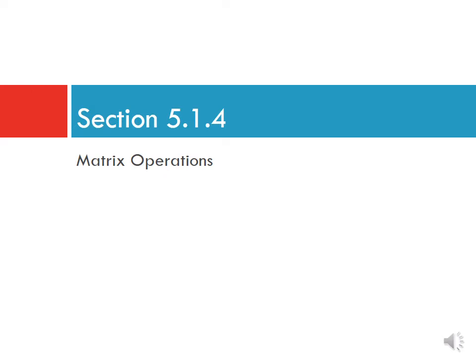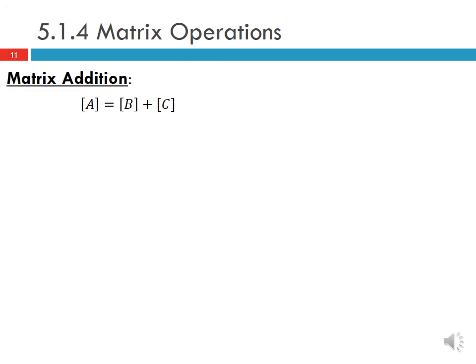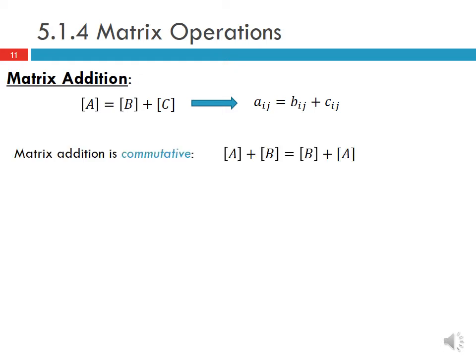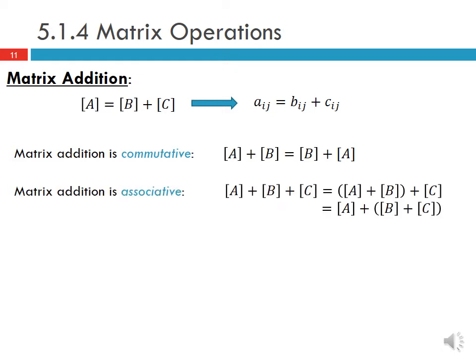For matrix addition, A equals B plus C means each element of A equals the sum of the corresponding elements of B and C — it's an element-wise operation where Bij plus Cij equals Aij. Matrix addition is commutative, so A plus B equals B plus A, and also associative, so A plus B plus C gives the same result regardless of the grouping order.